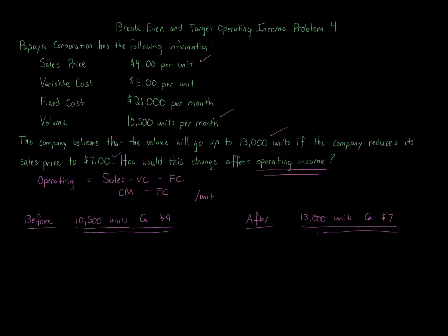Using the per-unit approach can save time, especially on a time-pressured exam or certification exam. The way the information is presented to you matters: if it's given in totals, do totals; if it's given in dollars per unit, use that. I'll use per unit here because it's faster, but you can still use the total approach if you prefer.